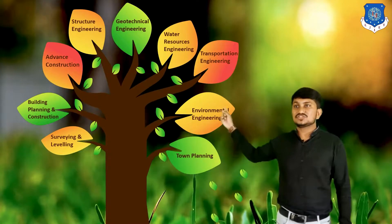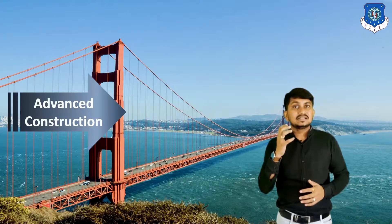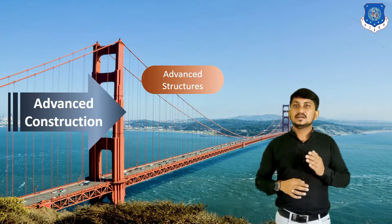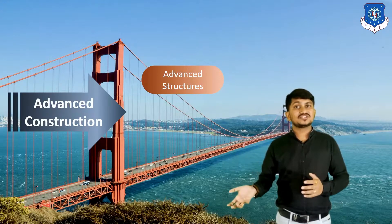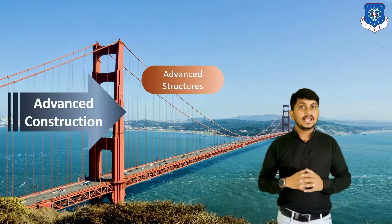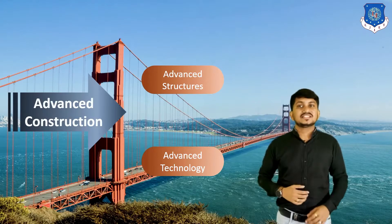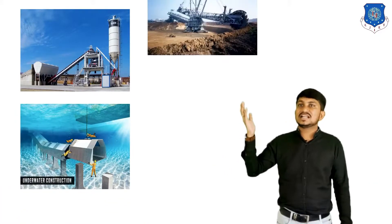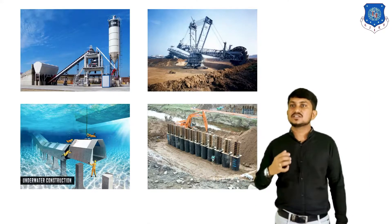Next, we will discuss Advanced Construction. Why is advanced construction separated from building construction? Because there is the construction of some advanced structures like dams, bridges, tunnels, and tall buildings, and for those, techniques used in regular building construction cannot be used effectively. Advanced techniques followed by civil engineers include concrete mixing plants, underwater construction, large-scale excavators and pile foundations.